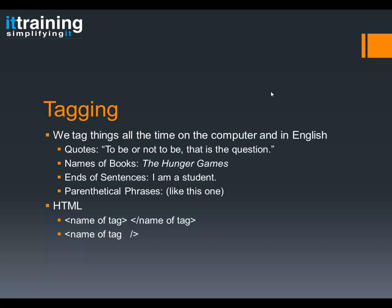In HTML we tag things, but instead of using a quotation mark, we use what we call HTML tags. They look like this — there are two types. The first type: there's a caret, the name of the tag, and the ending caret. To close the tag: a caret, a slash, the name of the tag again, and the ending caret. There's also another type of HTML tag — showing how to open it and close it.